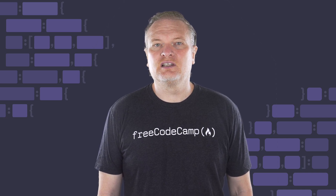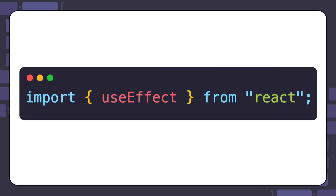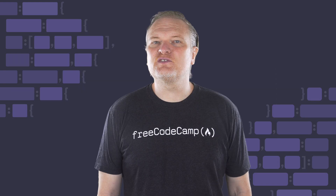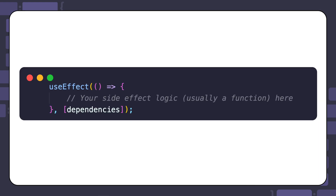To use the useEffect hook, you first need to import it. Then you use a function like this. The effect function runs after the component renders, while the optional dependencies argument controls when the effect runs.